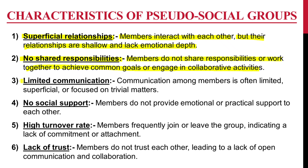Third is limited communication — communication among members is often limited, superficial, or focused on trivial matters. Fourth is no social support — members do not provide emotional or practical support to each other. Fifth is high turnover rate — members frequently join or leave the group, indicating a lack of commitment or attachment.